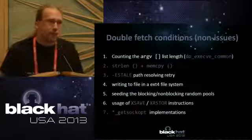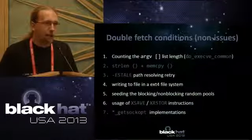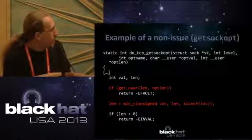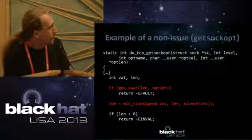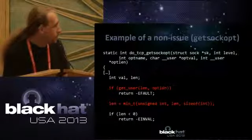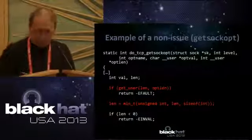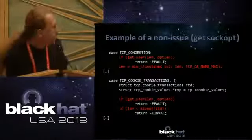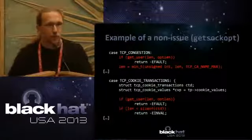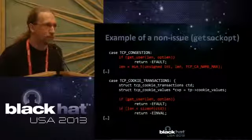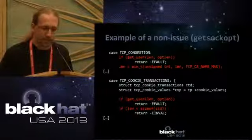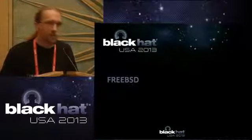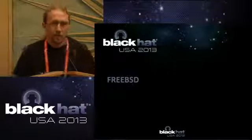That doesn't mean we detected no double fetch conditions — we detected a couple of them, but no exploitable ones. One example is in do_tcp_getsockopt: there's a get_user call that gets an opt_length from a pointer into a local variable, calculates a minimum value, and then deeper in a switch case there's another fetch from the same pointer. However, due to how the variable is used you cannot do anything malicious with it — you cannot use it to get root. It's basically a false positive in terms of vulnerabilities. We're still going to work on Linux and improve coverage, and we have some other approaches to test.